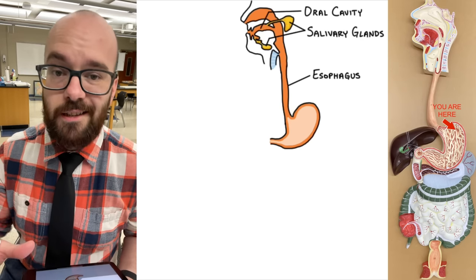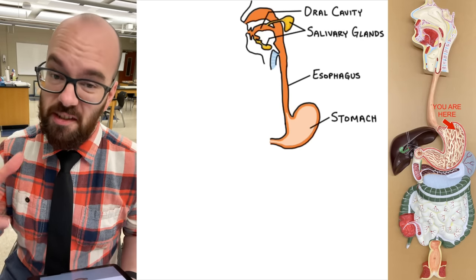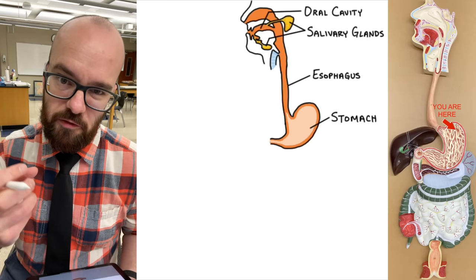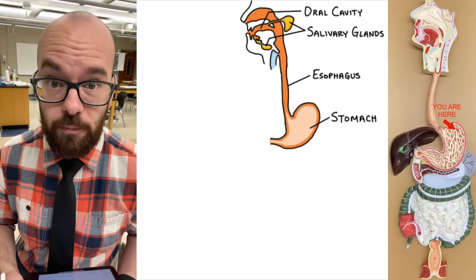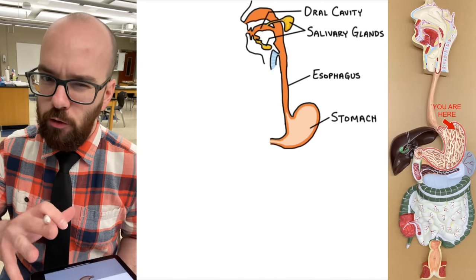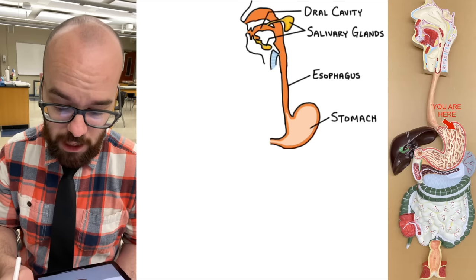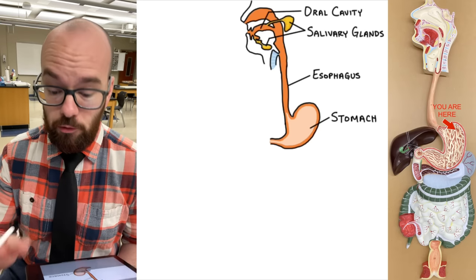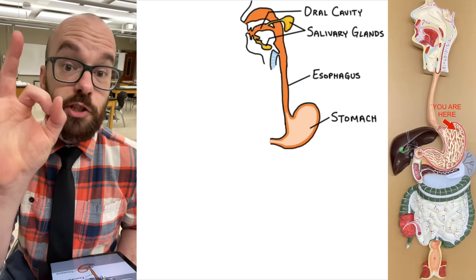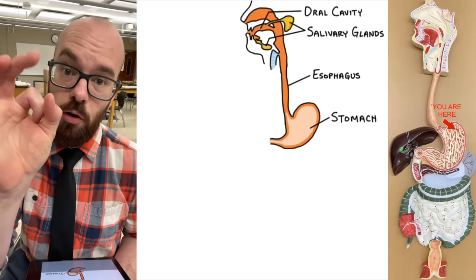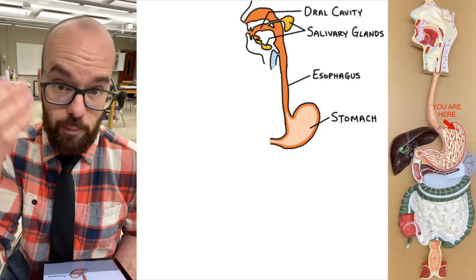Food will travel down the esophagus into the stomach, where it's going to undergo a bunch more digestion. The stomach has muscle that squeezes on the food, as well as a bunch of acid to help break down food. We also want to control where food goes and where that stomach acid goes. One of the things we have to prevent things from going where they're not supposed to are these little tiny muscles called sphincters.